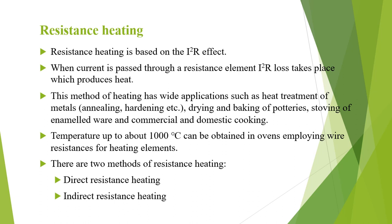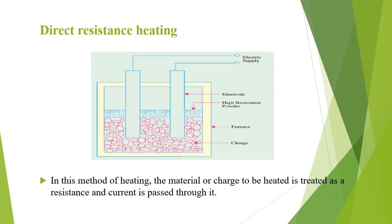There are two methods of resistance heating: direct resistance heating and indirect resistance heating. In direct resistance heating, the material or charge which is to be heated is treated as a resistance and current is passed through it.